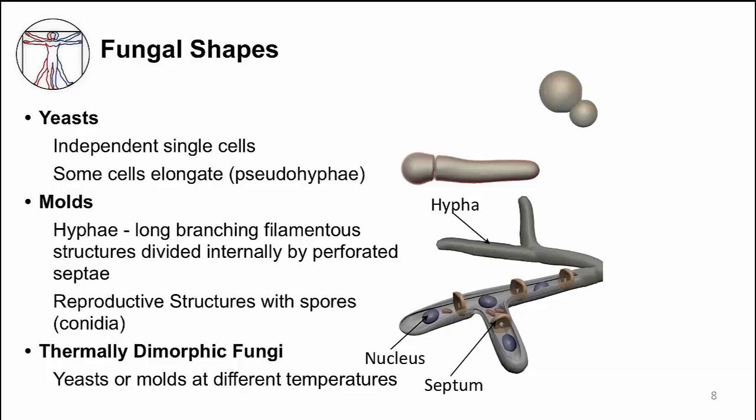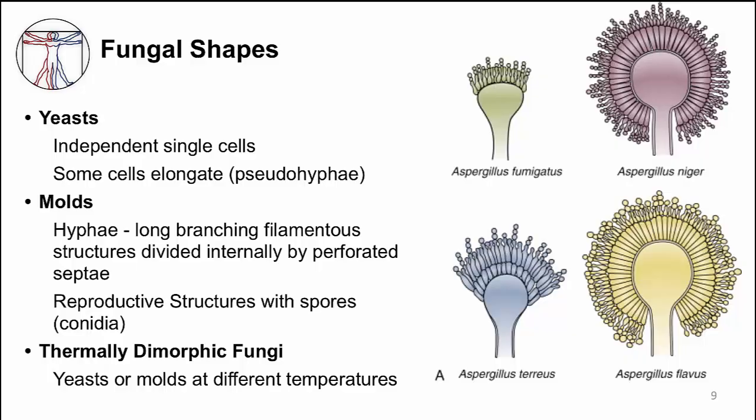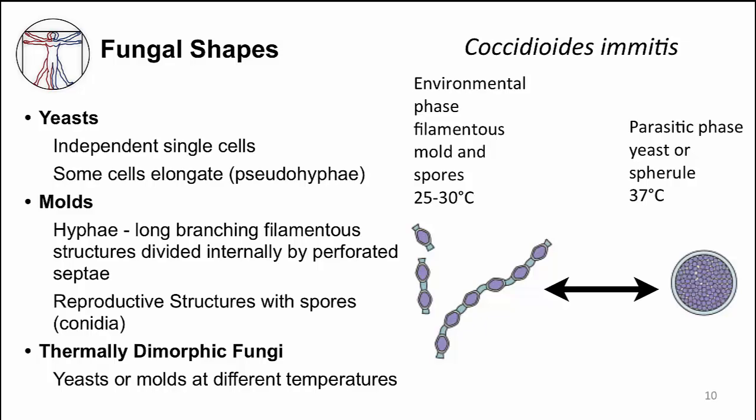Aspergillus is a typical example of a mold and can cause severe disease in people who are immunocompromised. Here are drawings of the reproductive structures for four different Aspergillus species — they look very different, but they're all Aspergillus. There are some fungi that can take the form of both yeast and molds. These are called thermally dimorphic fungi, dimorphic meaning two forms. In higher temperatures, like inside our body, these fungi take on the yeast form. In lower temperatures, such as in nature or at about 25 degrees Celsius in the laboratory, they take on a mold form.